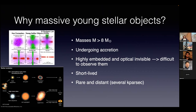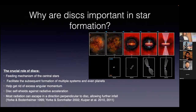Although massive stars are so important, there is little that we know about their formation. In order to understand how these stars form, we need to go into the earlier phases of star formation — the so-called massive young stellar object phase. We are mainly talking about masses more than eight solar masses. They are still undergoing accretion, they are highly embedded so we cannot observe them at optical wavelengths, they are short-lived compared to low mass stars, quite rare, and located several kiloparsecs away.